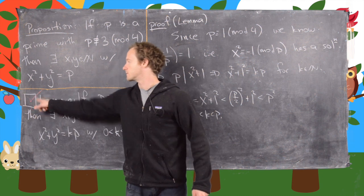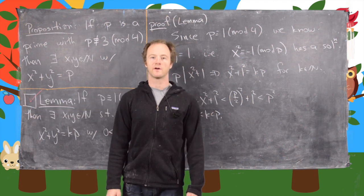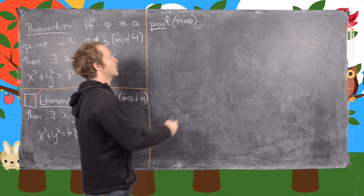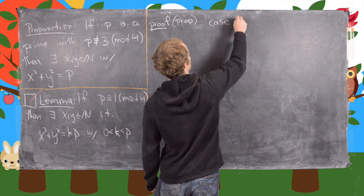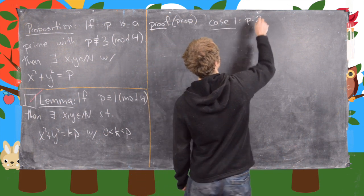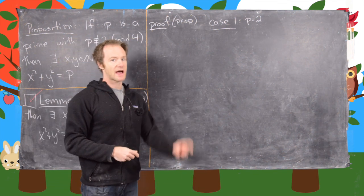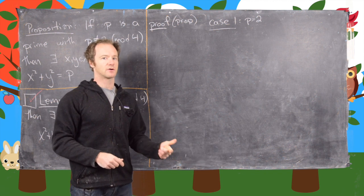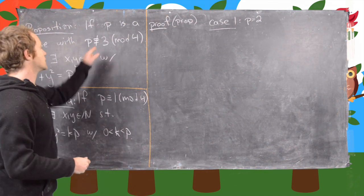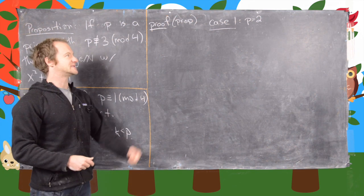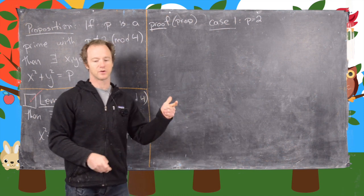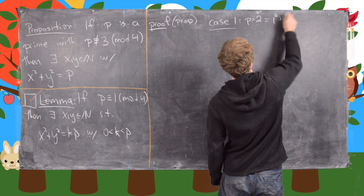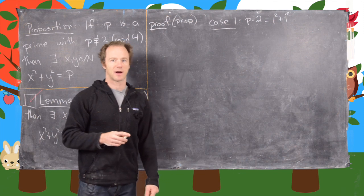Now we're done with the proof of the lemma. Let's look at the proof of the proposition. We'll look at a very simple case first: p equals 2. There are really three types of primes — the number 2 by itself, those congruent to 1 mod 4, and those congruent to 3 mod 4. We're looking at those not congruent to 3 mod 4, which means either the number 2 or congruent to 1 mod 4. For p equals 2, notice that 2 equals 1 squared plus 1 squared, so that satisfies the conclusion and we're good to go.